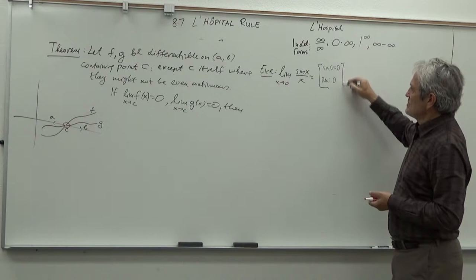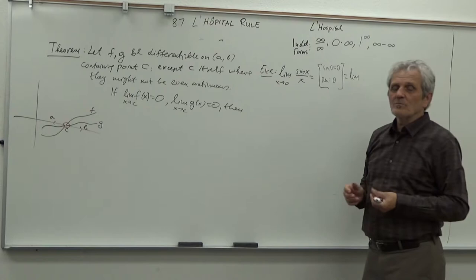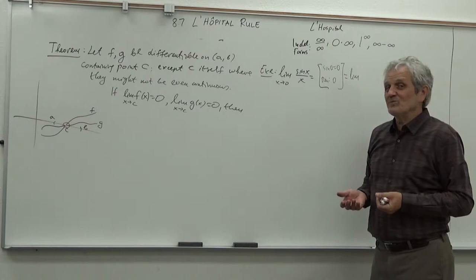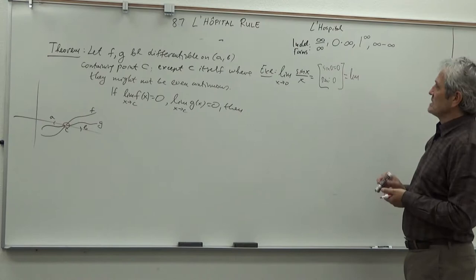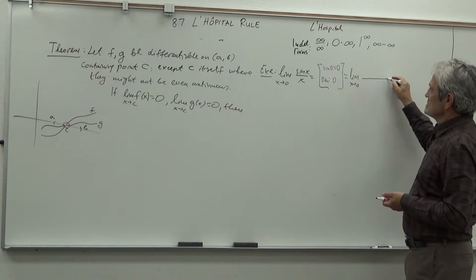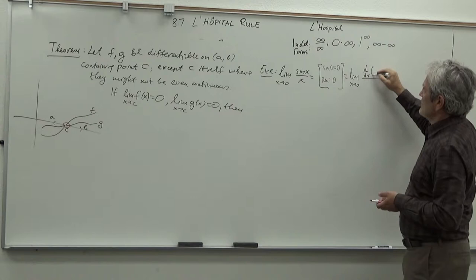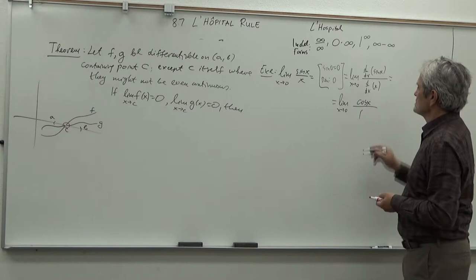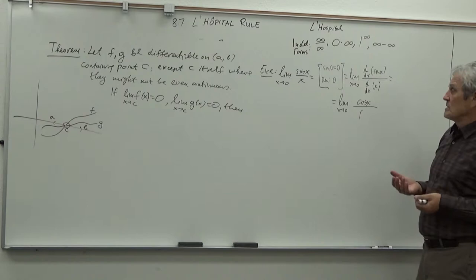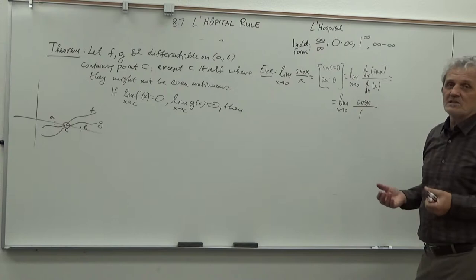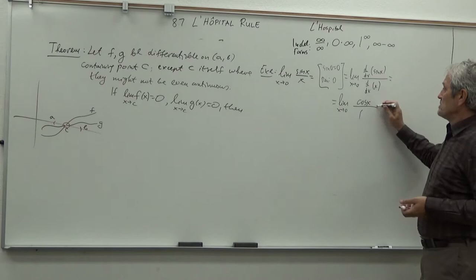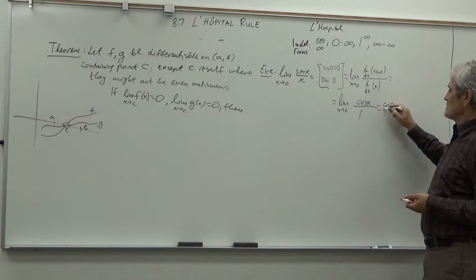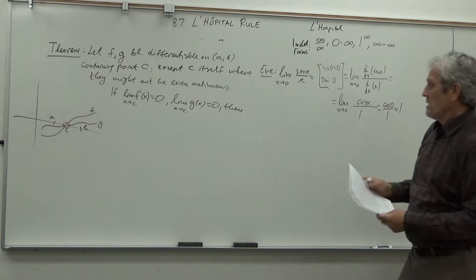Be careful: if you don't verify 0/0 first, L'Hôpital's rule is not only unnecessary — it will give the wrong result. So it is crucial that both limits are 0. Now we take the derivative of sin(x) over the derivative of x, giving the limit as x → 0 of cos(x)/1. The theorem says these two limits are equal. Since cosine is continuous, we just plug in: cos(0)/1 = 1. So the limit is 1.